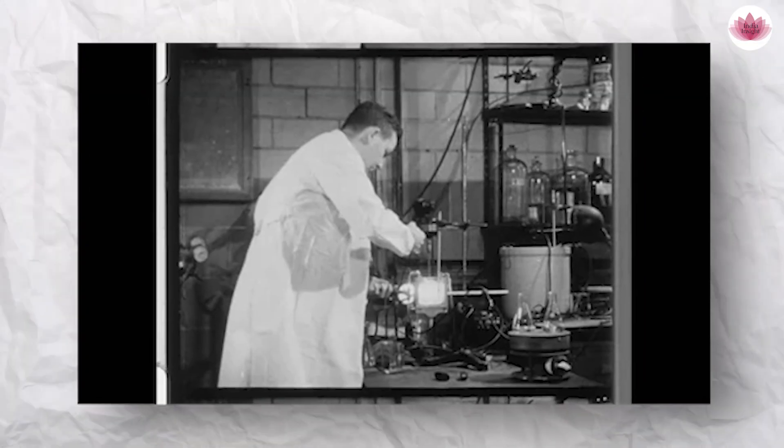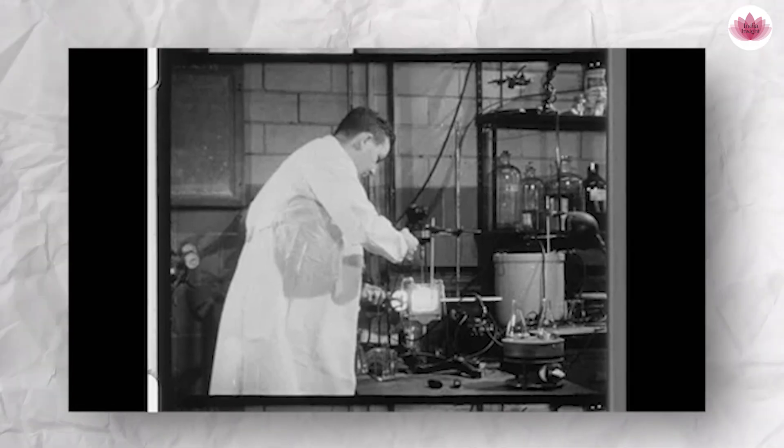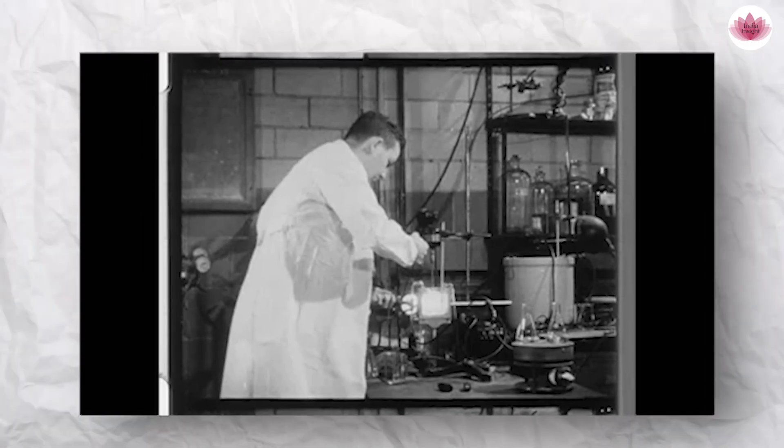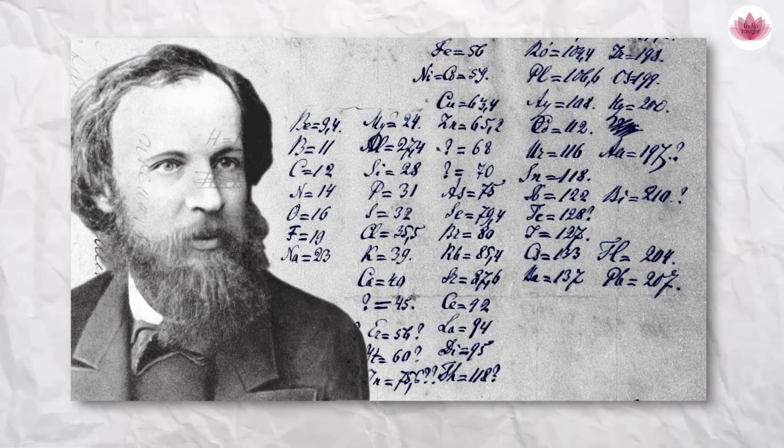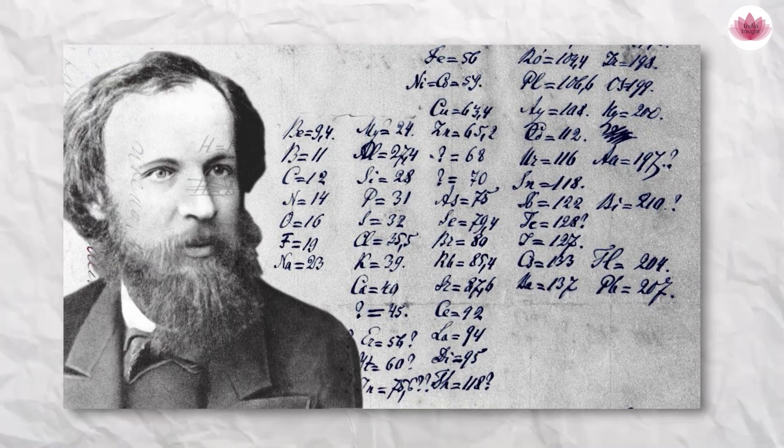Since the 19th century, scientists have been working to classify and group the elements. Numerous chemists made significant progress discovering patterns and relationships among smaller groups of elements. However, they struggled to create a comprehensive system that included all the known elements. The breakthrough came in 1869 when Mendeleev began organizing the elements by their atomic weights.